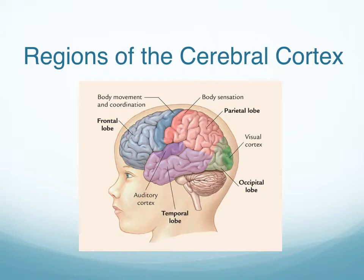The frontal lobes are responsible for thought, especially consciousness, problem solving, planning, and regulation of behavior. This area develops all the way into adolescence and early adulthood.